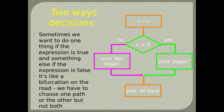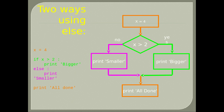Two-way decisions: sometimes we want to do one thing if an expression is true and something else if it is false — like a bifurcation on the road. We choose one path or the other but not both. If x is less than 2, print 'not bigger'. Else print 'bigger'. The same situation can be done with else instead of a second if.